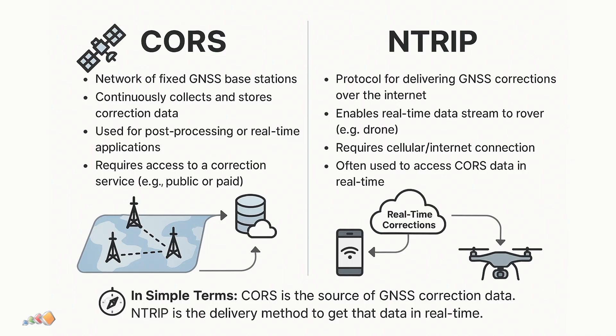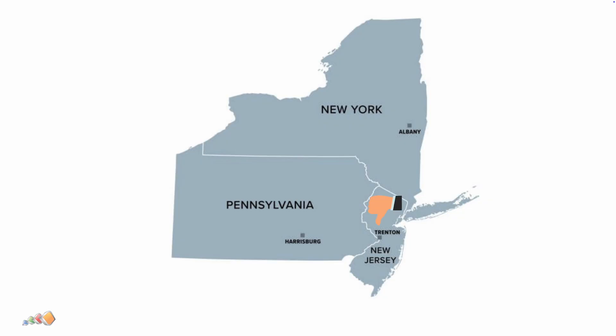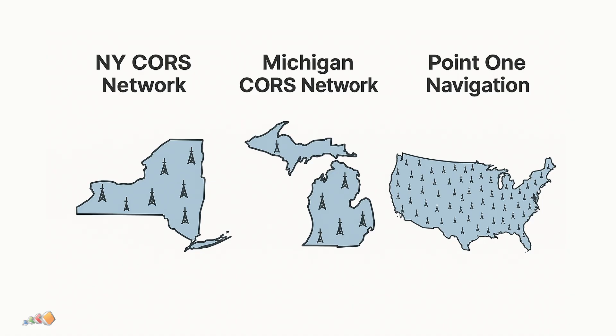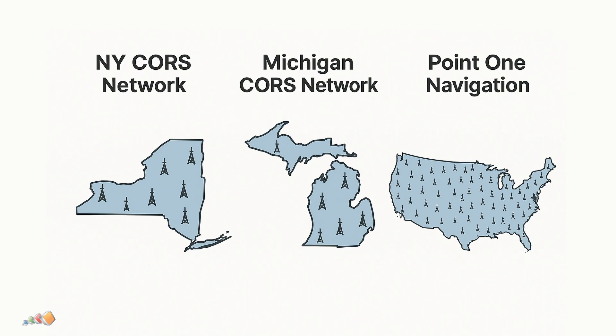Which CORS provider you select will depend on the area you'll be working in, and they are not all created equal. For example, New Jersey doesn't have a CORS network at all. Pennsylvania has a CORS network but doesn't allow public access, and New York and Michigan have great networks that are open and free to everyone. When I'm working in the New York area I frequently use the New York CORS system, and I will show you how that one works. The Michigan setup is also very similar, but each one is different so you'll need to do some research for your own local needs.